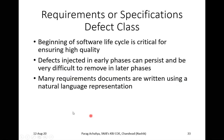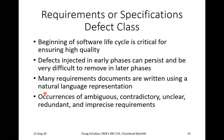Many requirement documents are written using a natural language representation. The help option in software is written in natural language — a language understood by the user, developer, or tester. Due to this, there is a possibility of occurrences of ambiguity, contradictory, unclear, and redundant requirements collected during the early phases. Ambiguity means confusion; contradictory means the opposite of what is intended; unclear documentation; and redundant means data can be repeated.